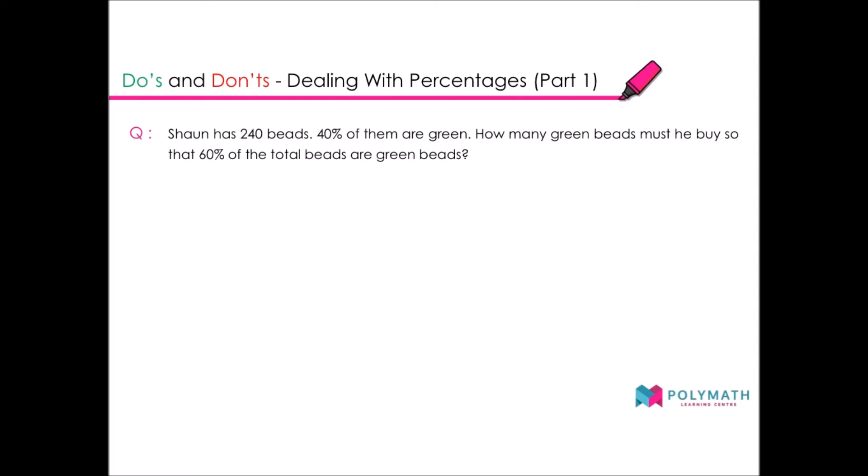At first glance you think this question is pretty straightforward, so many students would do this method. They will think that 100% equals all of the beads, which is 240 beads. Since the percentages are multiples of 10, you don't have to get 1%, you only have to get 10%. So 240 divided by 10 gives you 24.